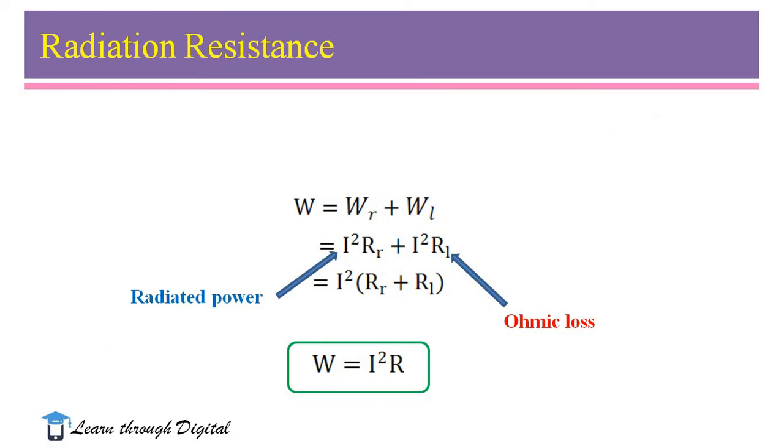Here, power radiated by an antenna is written in terms of RR, that is I²RR. Power loss is I²RL.